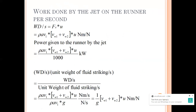Next is the work done by the jet on the runner per second. Work done and its associated efficiency and power will be asked in the problem. Work done per second is given by force times u: rho * A * v1 * (vw1 + vw2) * u. Since it is a machine they will definitely ask what is the power given to the runner — power is simply dividing the work done per second by 1000 to get kilowatts.